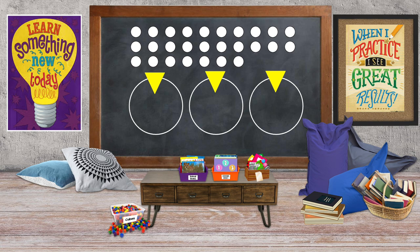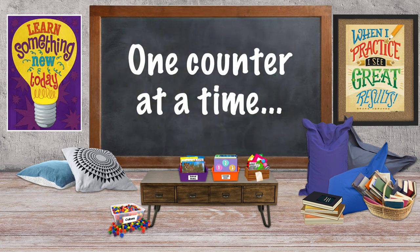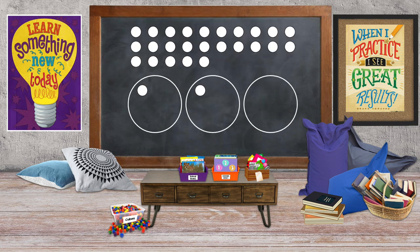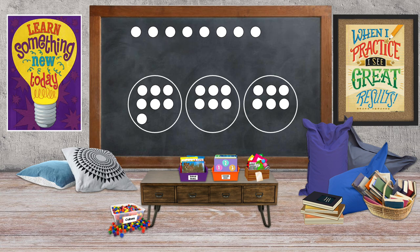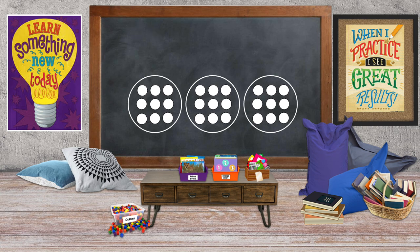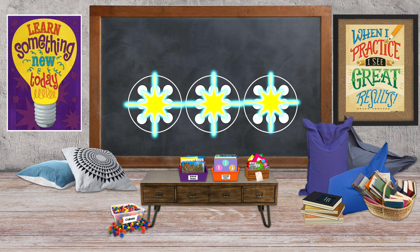It's important to only move one counter at a time. 1, 2, 3, 4, 5, 6, 7, 8, 9, 10, 11, 12, 13, 14, 15, 16, 17, 18, 19, 20, 21, 22, 23, 24, 25, 26, 27. We've used all our counters. Our three groups are done.